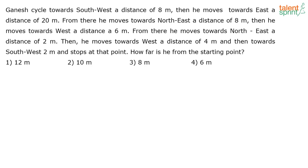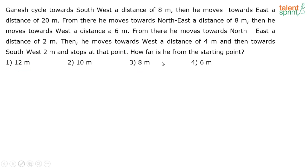Let's try this out. The question says: Ganesh cycles towards southwest a distance of 8 meters, then moves towards east a distance of 20 meters, from there moves northeast a distance of 8 meters, then west a distance of 6 meters, then northeast a distance of 2 meters, then west a distance of 4 meters, then southwest 2 meters, and stops. How far is he from the starting point? Options: 12 meters, 10 meters, 8 meters, and 6 meters.